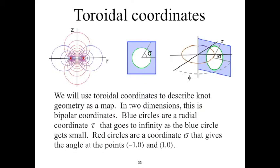Toroidal coordinates are a natural coordinate system to describe knot geometry. The two-dimensional version of toroidal coordinates is bipolar coordinates. In the diagram on the left, the blue circles are sets of constant τ. τ is a radial coordinate that has the opposite sense of the usual radial coordinate — it is a measure of how far away you are from the focal points. τ goes to infinity as the size of the blue circles goes to 0, and τ goes to 0 as the size of the blue circles goes to infinity. The red circles are sets of constant σ.